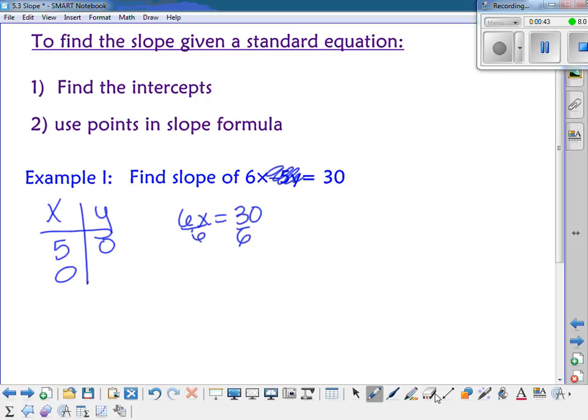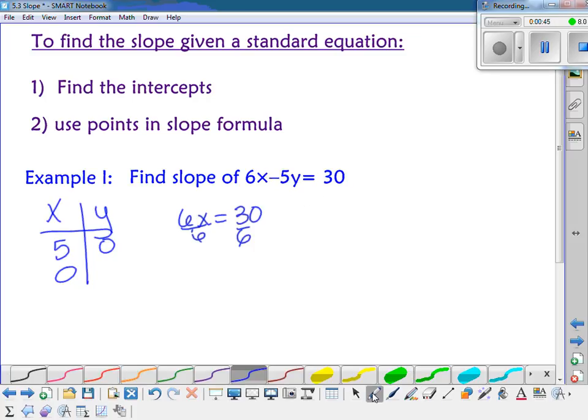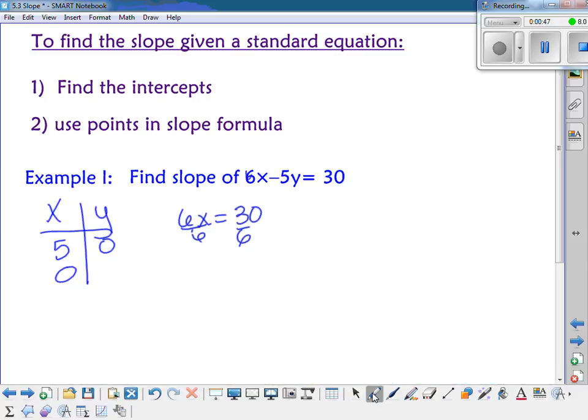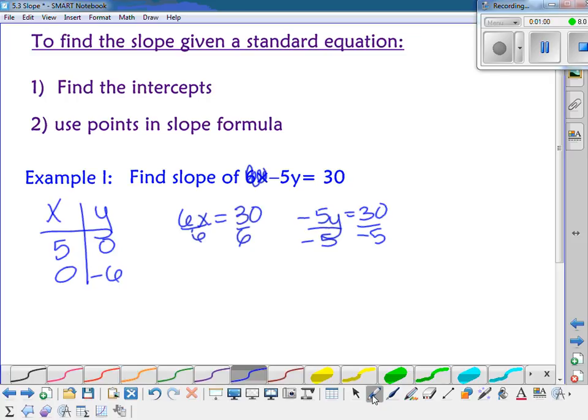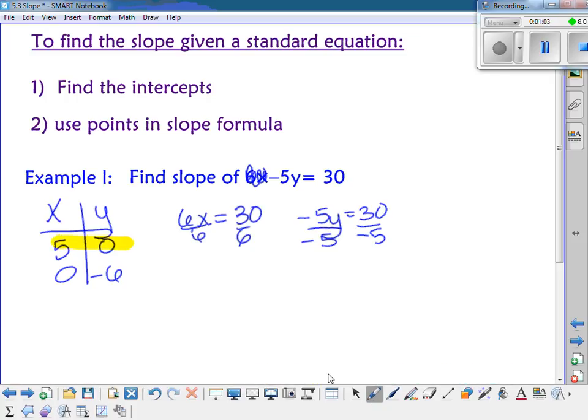And then if the x is 0, then I would have negative 5y equals 30. And so y would be negative 6. Okay, so there are my two points right there. I've got the point 5, 0 and the point 0, negative 6.